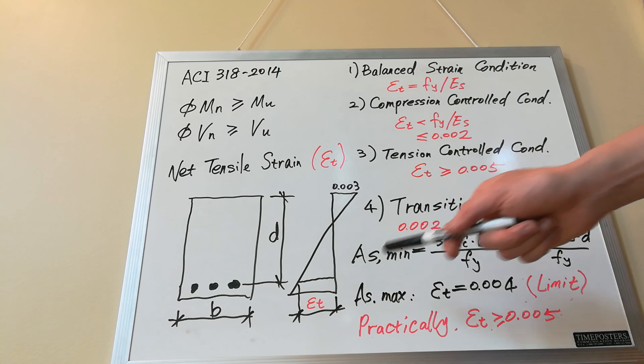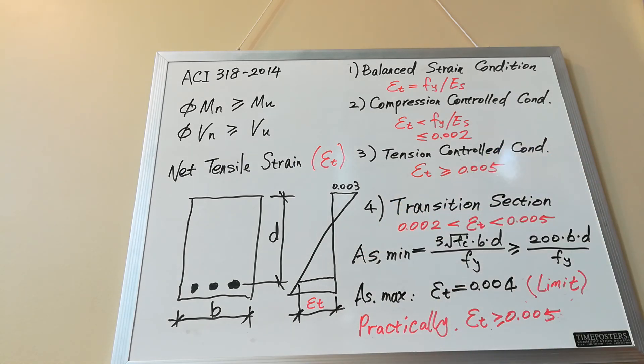Now based on the value of epsilon t, the section drops into one of four categories.